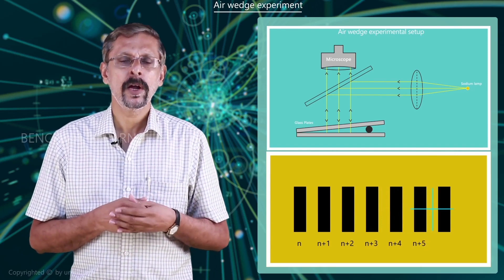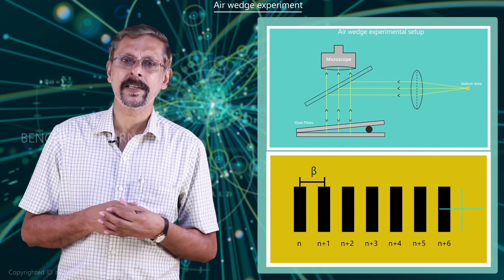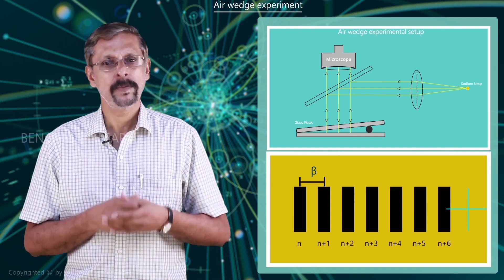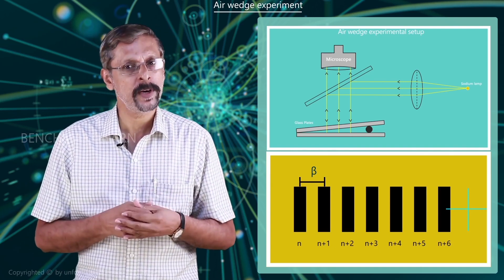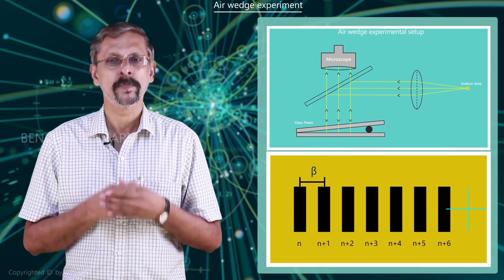From the reading, the value of beta is calculated where beta is the bandwidth which is the distance between two consecutive dark bands or two consecutive bright bands.